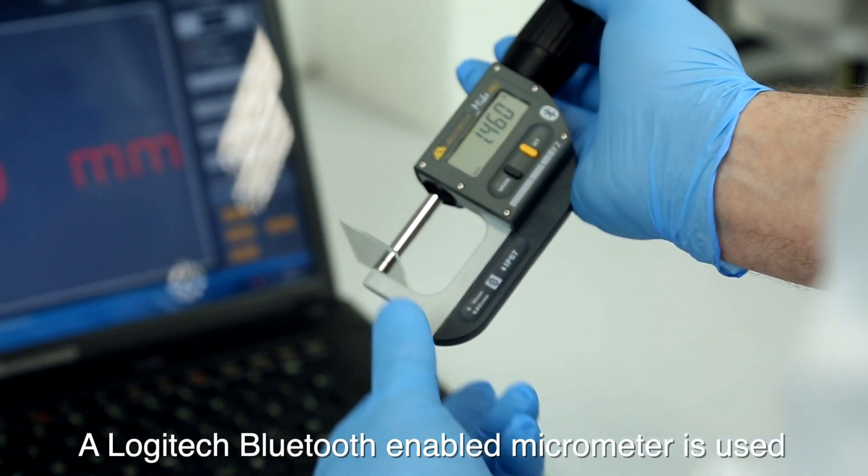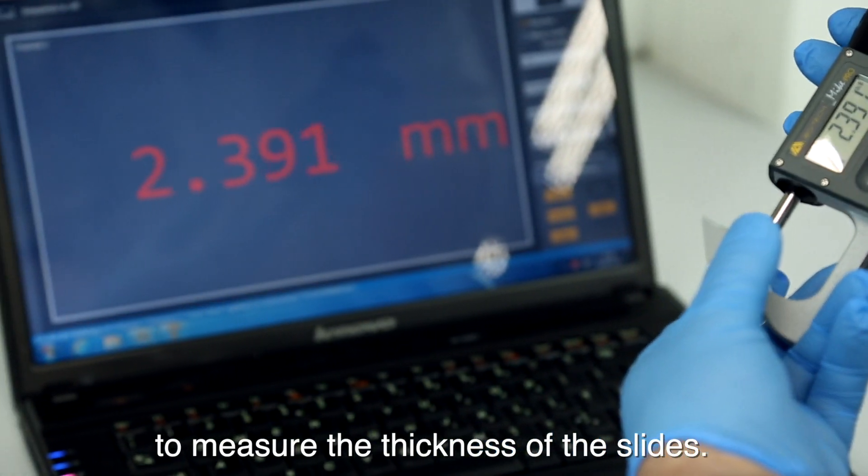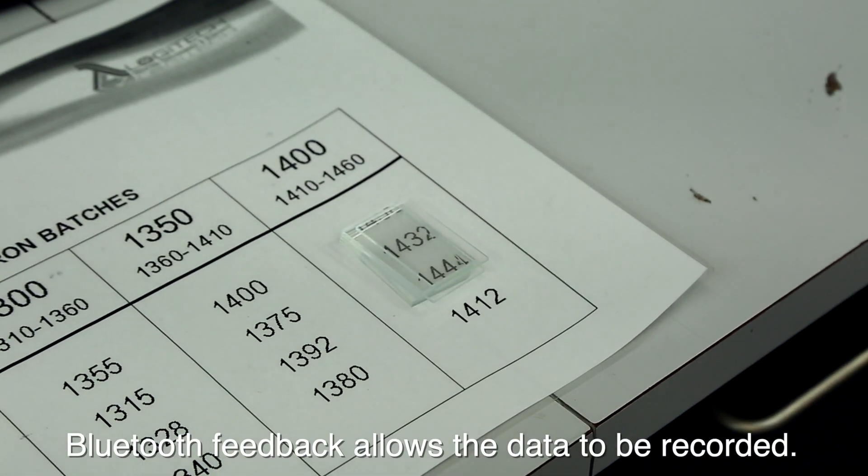A Logitech Bluetooth enabled micrometer is used to measure the thickness of the slides. Bluetooth feedback allows the data to be recorded.